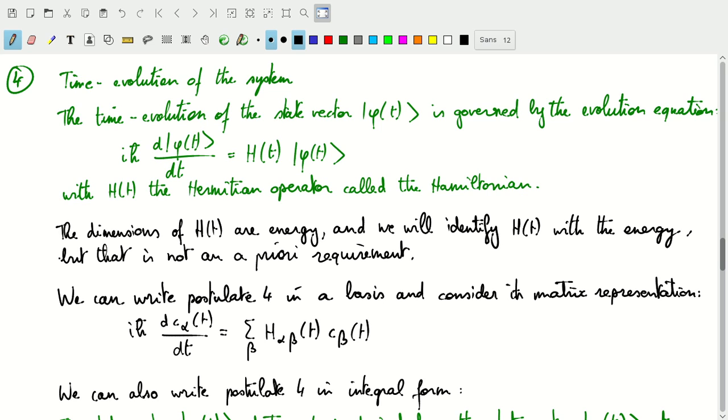So in this fourth postulate we learn about the dynamics of the system. So how does the system change from one time to the next? And what the time evolution equation of the system says is that a state vector phi, which in this case now becomes a function of time, is governed by an evolution equation which is i h bar, total time derivative of the state vector, must be equal to the Hamiltonian operator operating on the state phi.